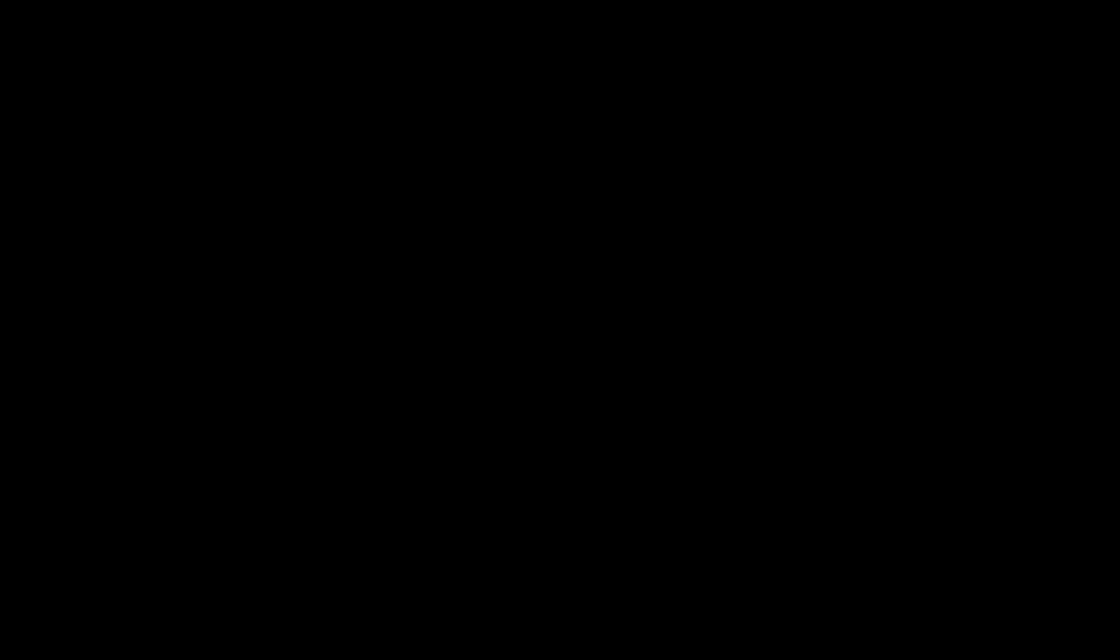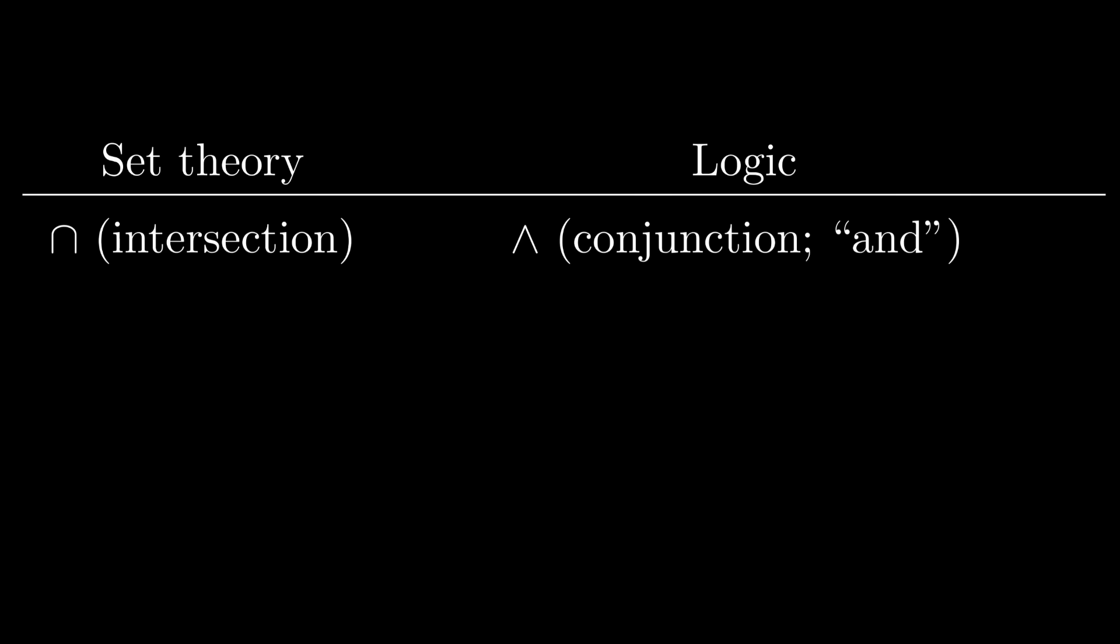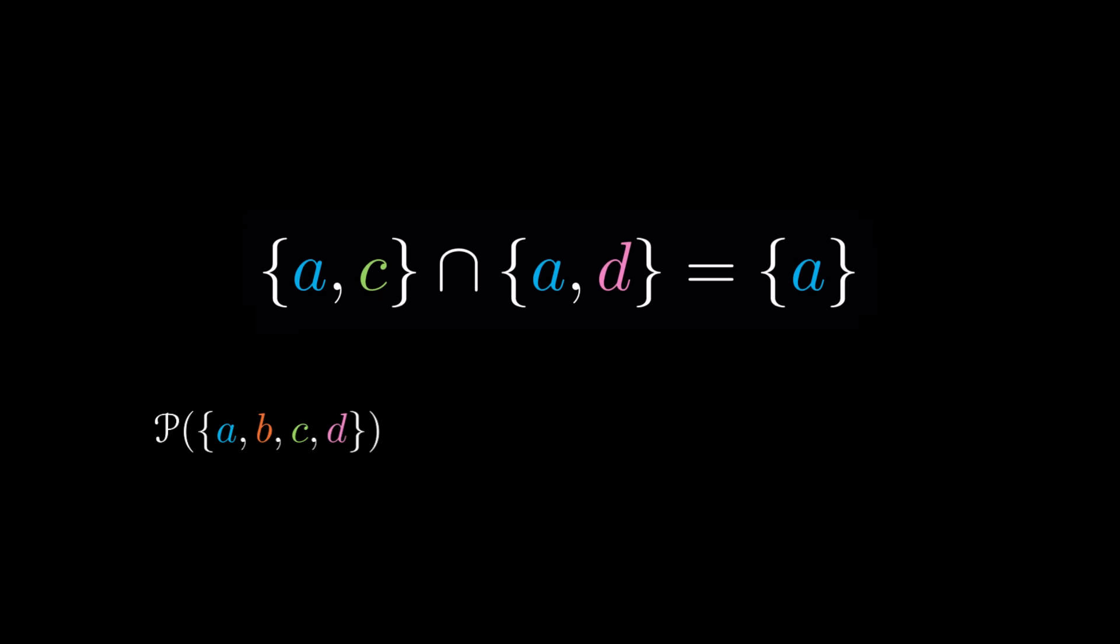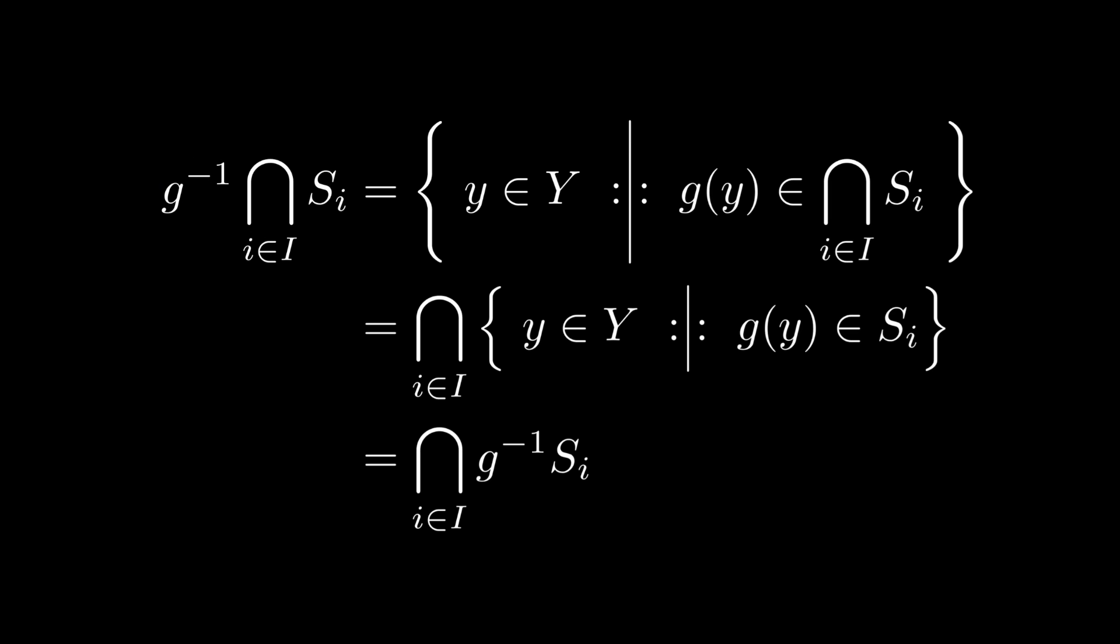On the other hand, the set-theoretic intersection corresponds to the logical operation of conjunction. An element is contained in the intersection of two subsets A and B if it is contained in A and it is contained in B. In a power set, we can also take the intersection of as many subsets as we want. Moreover, the preimage of the intersection of a family of sets is exactly the intersection of the preimages of these sets.